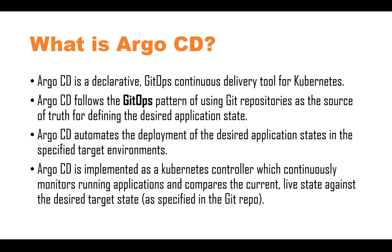What ArgoCD does is it continuously looks at what your current state is and what your desired state is. It is always continuously monitoring your application in the Git repository, and whenever you make changes it keeps checking your current live state and tries to transfer your current state to your desired state as specified in your Git repo. ArgoCD automates the deployment of your desired application state in the target environment.